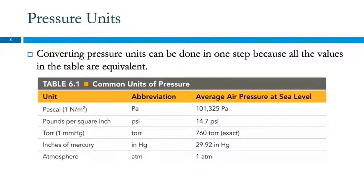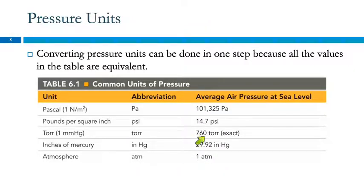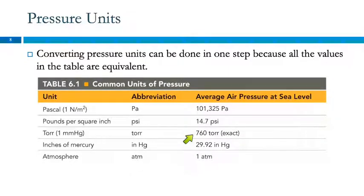There are other pressure units as well. An atmosphere — abbreviated ATM — is average atmospheric pressure at sea level. One ATM equals 760 Torr. The table shows all equivalent measurements: one atmosphere equals 29.92 inches of mercury, 760 Torr, and 14.7 PSI — pounds per square inch.